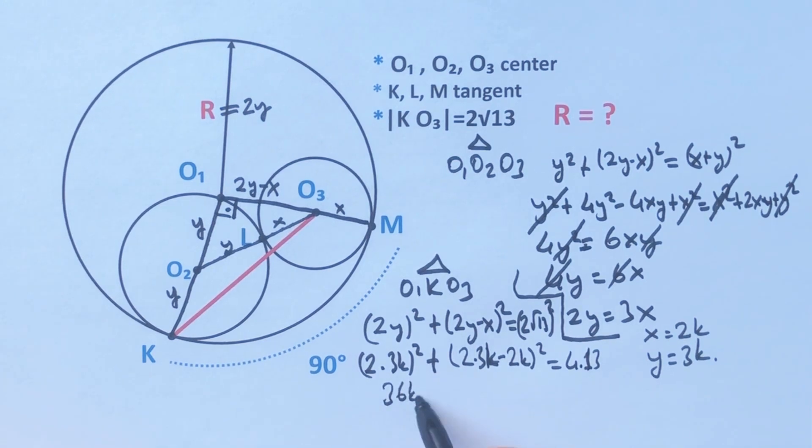So 36k² plus 16k² equals 52. So 52k² equals 52.